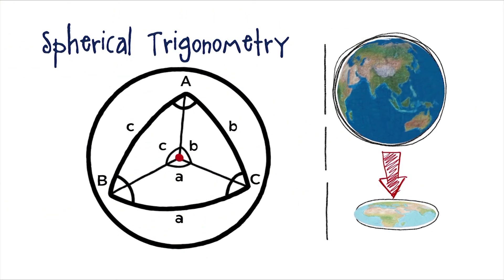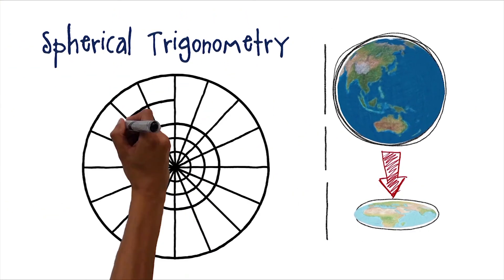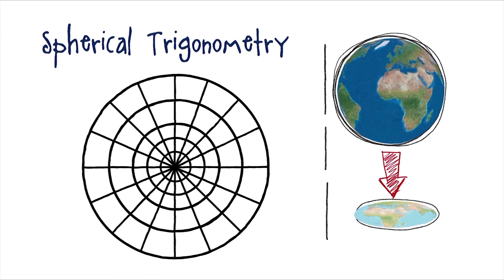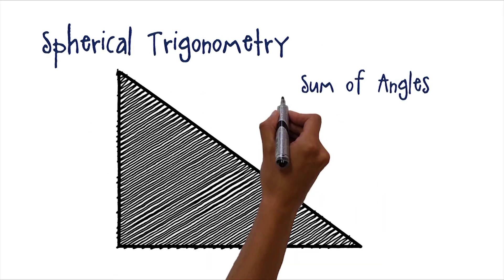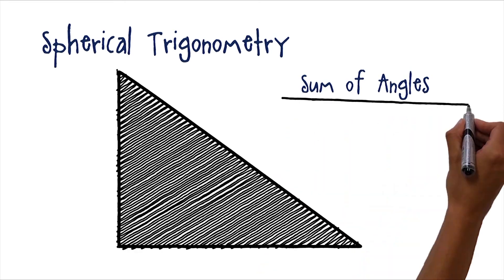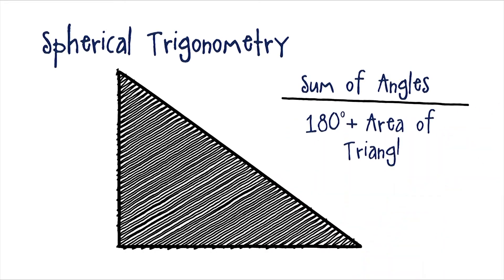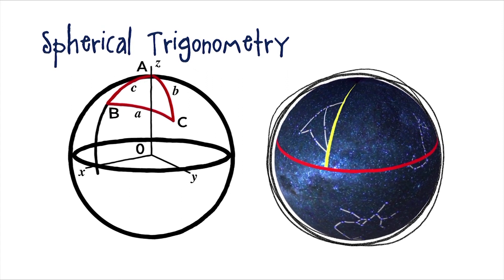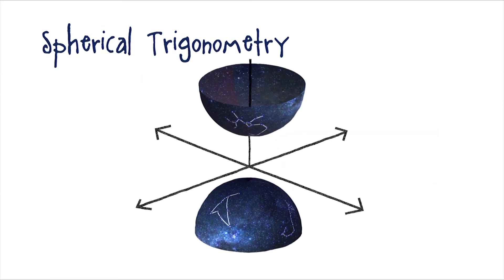Spherical trigonometry deals with curved triangles drawn on the surface of a sphere. This branch of trigonometry, used extensively in astronomy and navigation, enables astronomers to project the spherical heavens onto a flat surface for mapping.